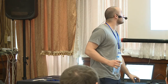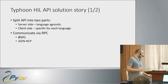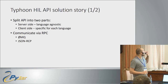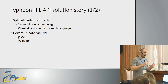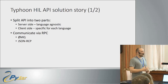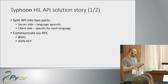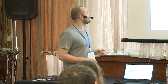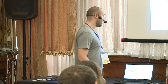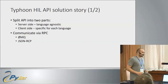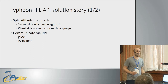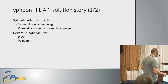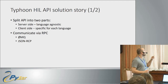So how do we solve this problem? We decided to split the API into two parts: one part is the server side, which collects the requests, contacts the actual software, communicates with it, and returns the answer. It was important for us to have a language-agnostic server side — otherwise we would have to provide a separate server side for each language, and we don't want that.